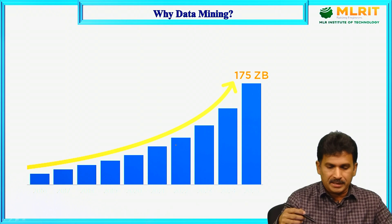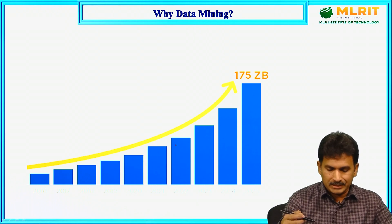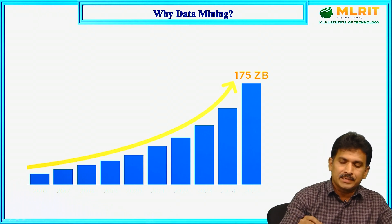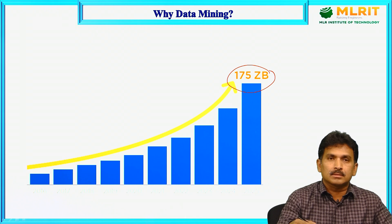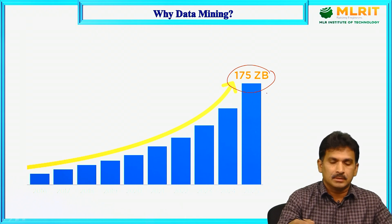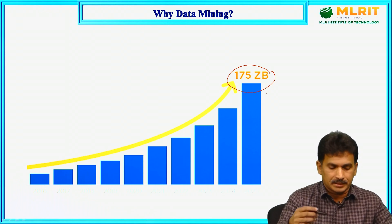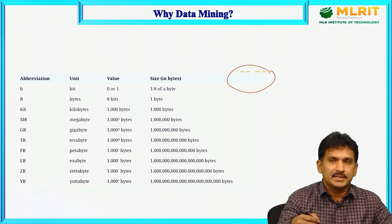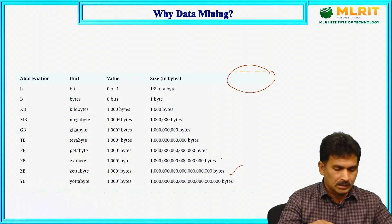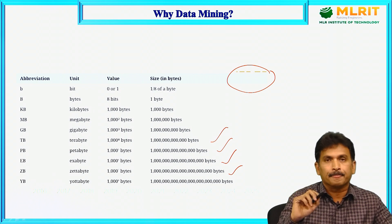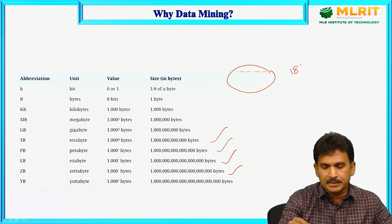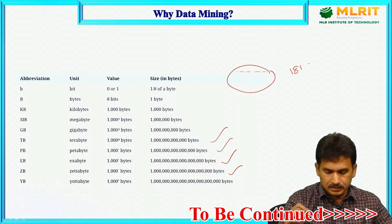IDC has predicted that by 2025, our digital universe will have more than 175 zettabytes of data. If you see the expanded form of this number in bytes, you would understand how huge this data is. Even other predictions suggest more than 181 zettabytes of data will be generated in 2025. Looking at the number of bytes — even from exabytes to petabytes to terabytes — this is a huge volume.